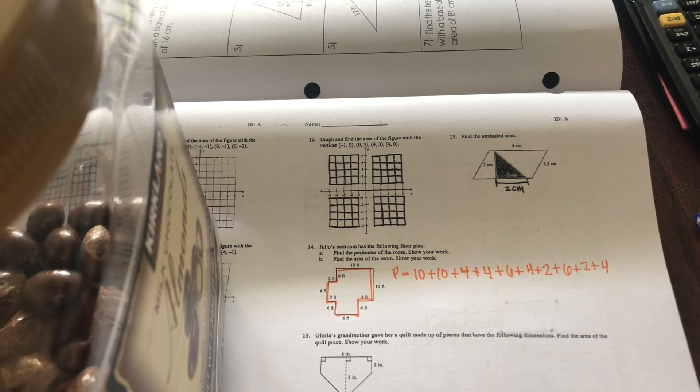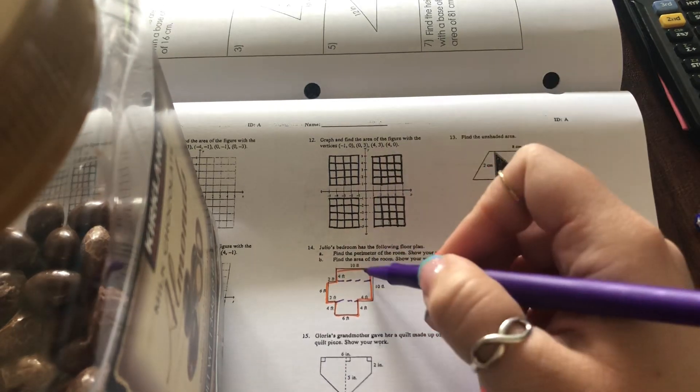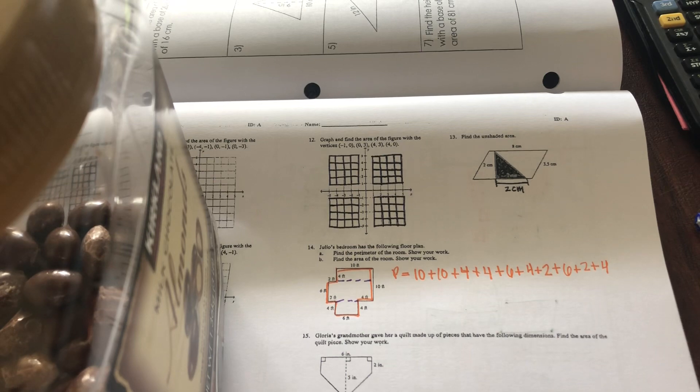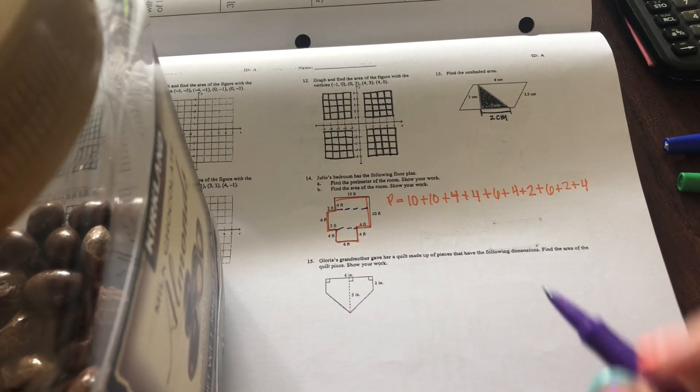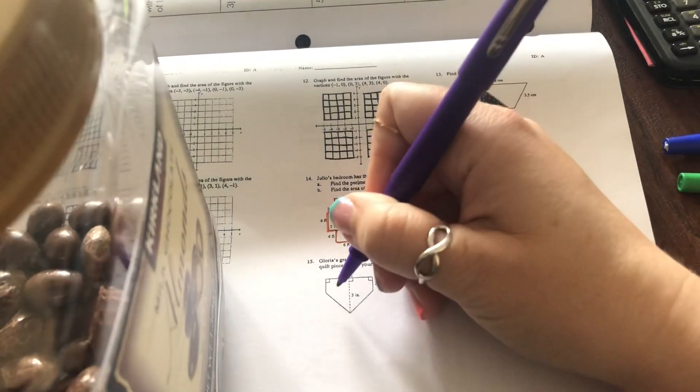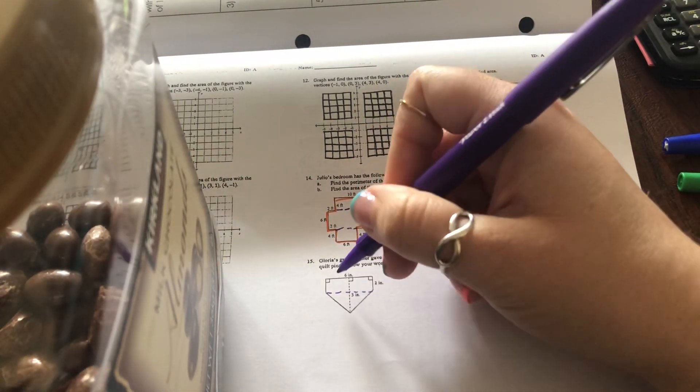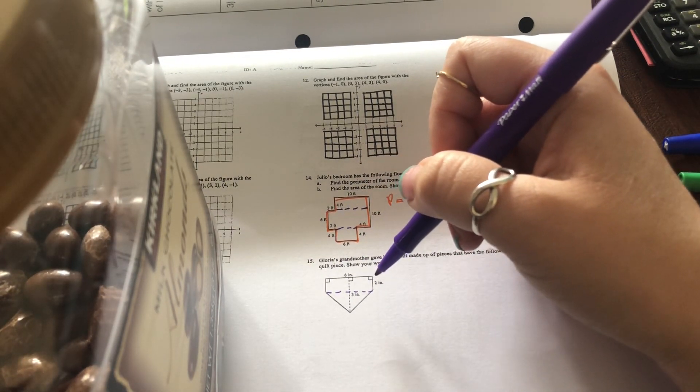It also asks you in part B to find the area. So I would suggest that you cut it there and there, and then you have this rectangle plus that rectangle plus that rectangle. I'll show the answers at the end, but for right now, we're going to skip that. And if we look at number 15, this isn't an actual shape. It's a composite shape, even though it doesn't look like it. So if you cut it off right here, you have this rectangle of six by two, and then this top triangle.